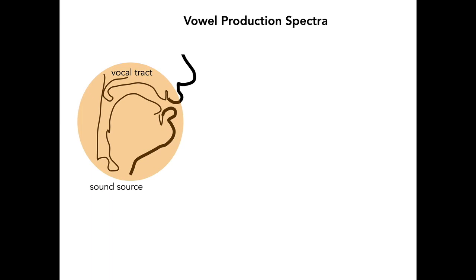Typical production of vowels is based on vibration of the vocal folds, providing a sound source that is filtered by the acoustic characteristics of the vocal tract. The sound that radiates at the lip opening contains information of both the source and filter.